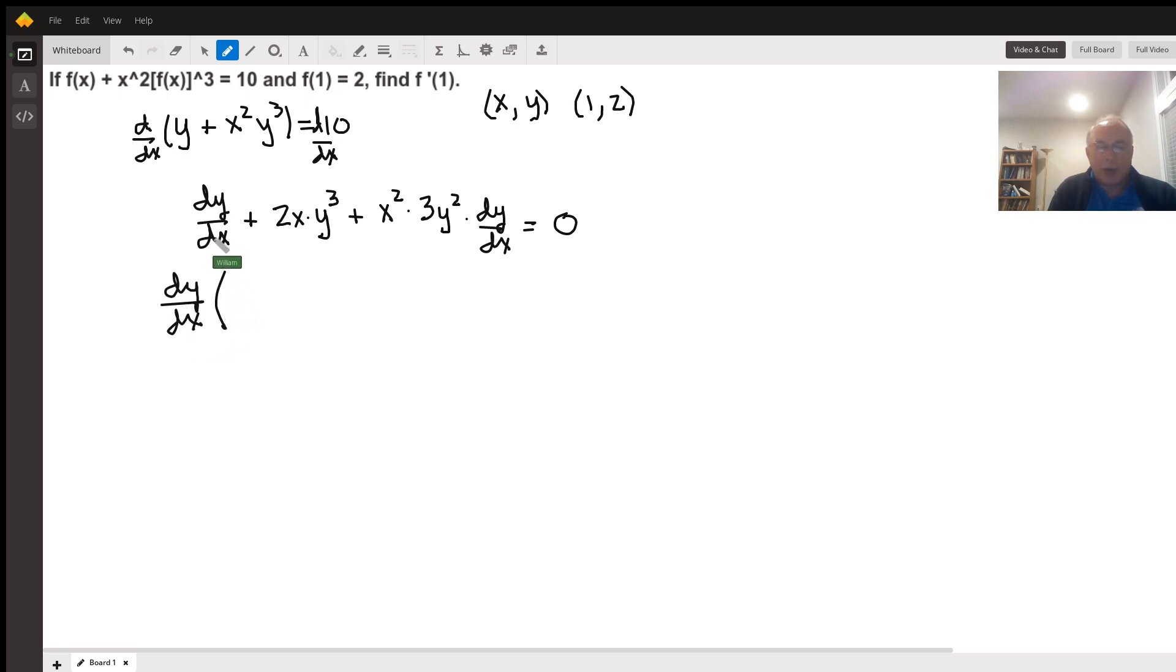I'm going to factor out the dy dx so I can get a single expression in terms of dy dx. So dy dx times 1 gives me the first part here. And then I've got this part here, which is, so plus, I'm going to put the 3 first, 3, x squared, y squared.